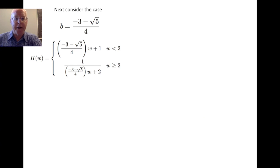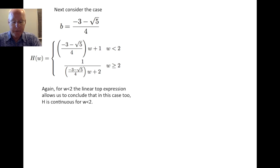What about the other case? If b equals minus 3 minus root 5 over 4, the considerations are the same. Again, when w is less than 2, we just have this linear function, again bw plus 1. And so, this also is continuous for w less than 2.